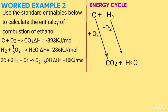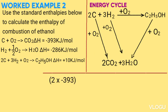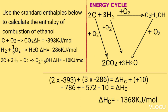In the energy circle: carbon → CO₂ and hydrogen → H₂O is the direct route. The indirect route is carbon + hydrogen → C₂H₅OH, then C₂H₅OH → CO₂ + H₂O. Balancing: 2 moles carbon, 2 moles CO₂, 3 moles hydrogen, 3 moles water. Calculation: 2×(−393) + 3×(−286) = ΔH_combustion(ethanol) + 10. This gives −786 + (−858) − 10 = ΔH_combustion of ethanol. Hence ΔH_combustion of ethanol = −1644 kJ/mol.